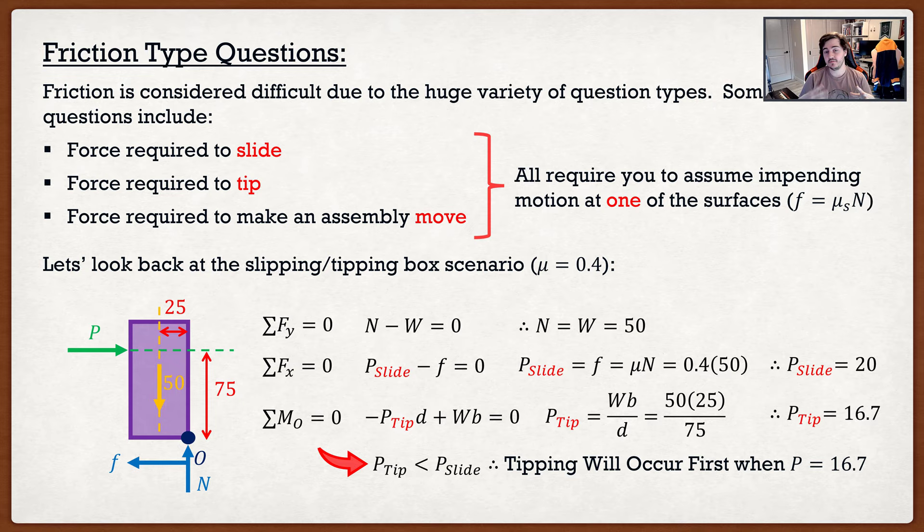Because the tipping force (16.7) is lower than the force required to make it slide (20), tipping will occur before sliding, at P = 16.7. So the answer to 'what is the force required to cause motion?' is 16.7. And will it slide or will it tip? It will tip.